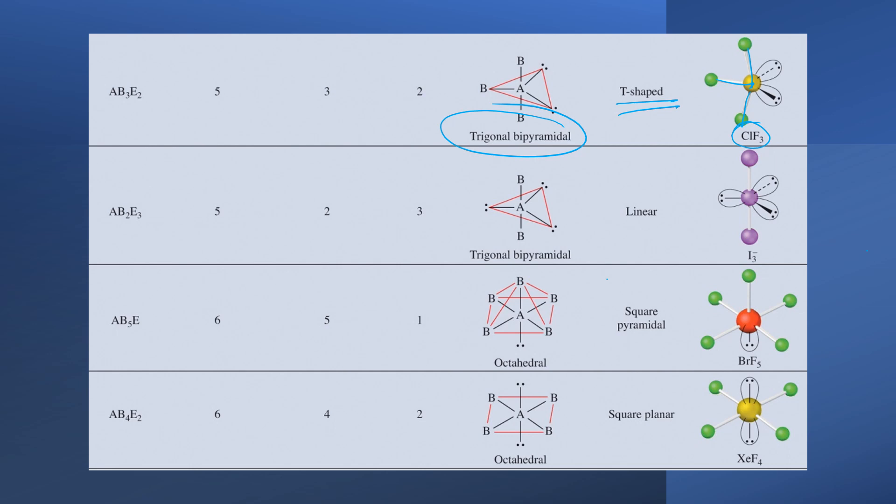Again, if we have trigonal bipyramidal, but this time our combination is two atoms bonded and three lone pairs, we're going to have, again, trigonal bipyramidal, five things around our central atom. But interestingly, this turns out to be linear, and an example of this is I3-.